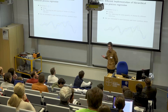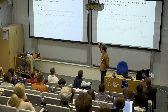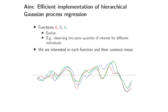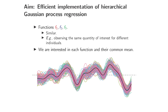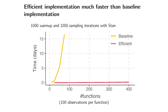So what is the setting that we're interested in? We have several functions that we observe over time — this could be blood sugar for different persons — and we're interested both in these individual functions and in the underlying common mean, drawn in black here. We get observations over time and we want to sample from the posterior. The problem is that we probably don't have three persons; we may have hundreds of people, and then it becomes very important to think about computational efficiency.